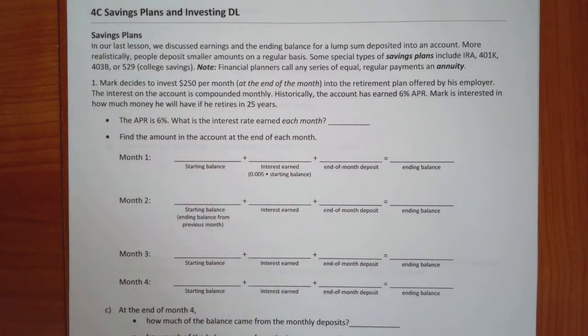So, people will deposit smaller amounts on a regular basis. There are some special types of savings plans. Of course, you can just get a plain old savings plan. But you can also do IRAs, 401Ks, 403Bs, 529, which is a college savings. And there's all different kinds, even within those. In an IRA, it could be a traditional or a Roth. 403B is the same as a 401K, except it is for educators. There's all kinds of different things.